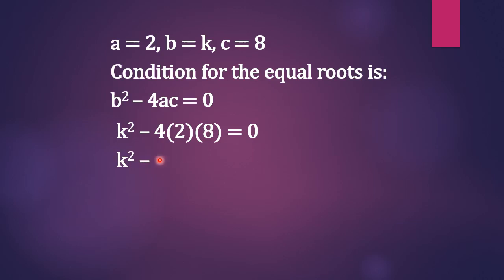k² - 64 = 0. That implies k² = 64. So k = ±8.